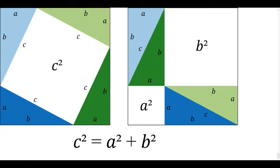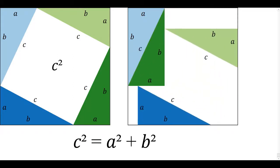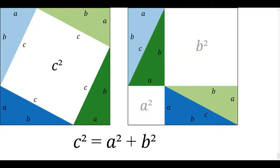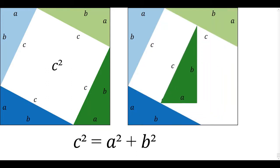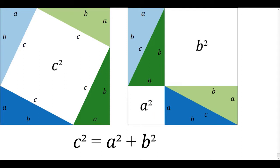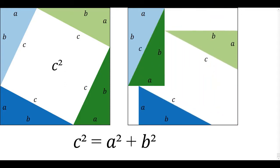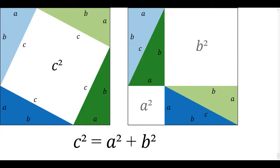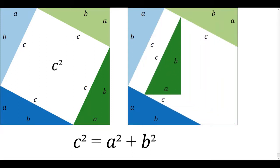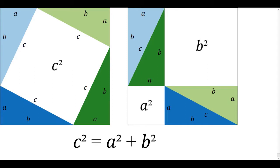On the right, you see that same outer square but with the right triangles rearranged, so the resulting white space — equal in area to the original white space — becomes A² and B². The animation shows us starting with the original configuration and moving the triangles so that the white space, which always has the same area throughout, starts as C² and ends as A² + B².